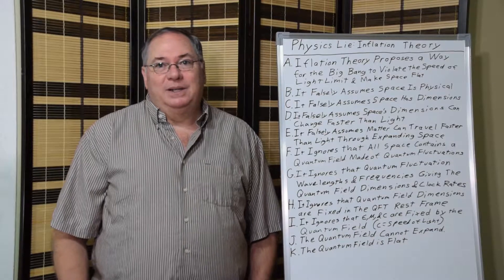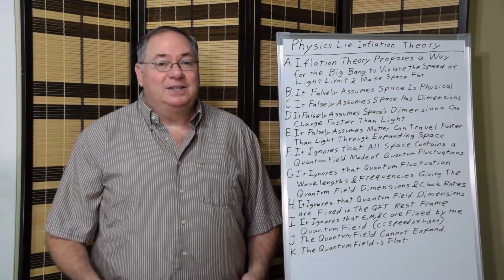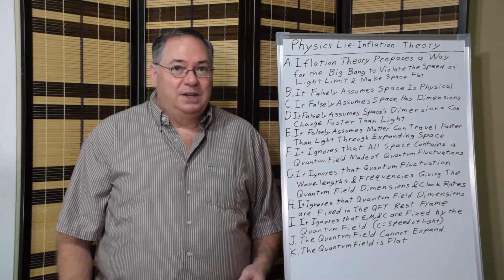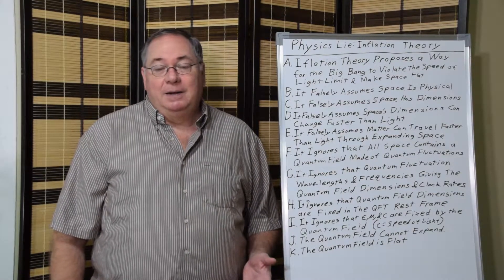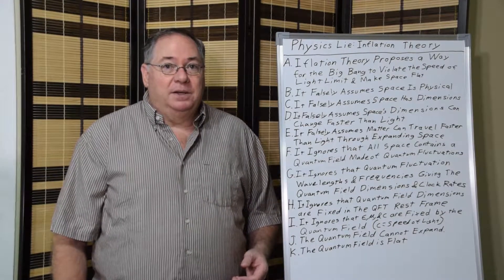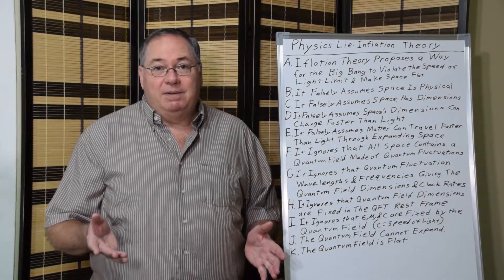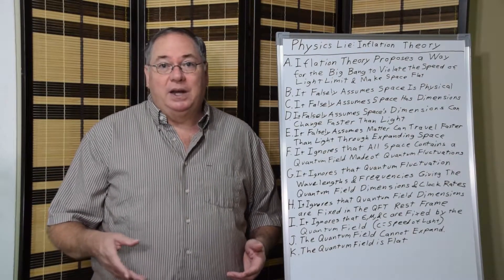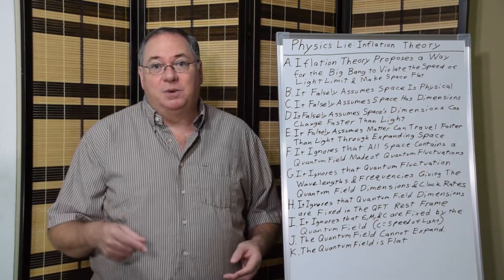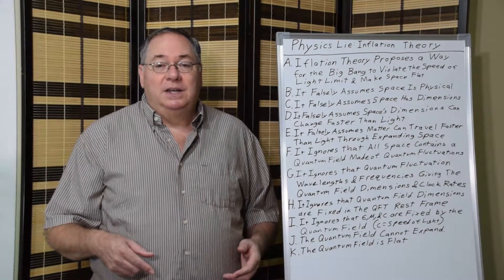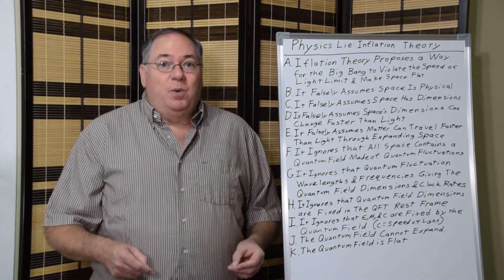Now inflation theory was devised as a scheme to salvage the Big Bang Theory because the Big Bang Theory violates the speed of light limit. Because if the speed of light limit was being observed we couldn't see anything more than 6.9 billion light years away in a 13.8 billion light year universe that starts at a point.